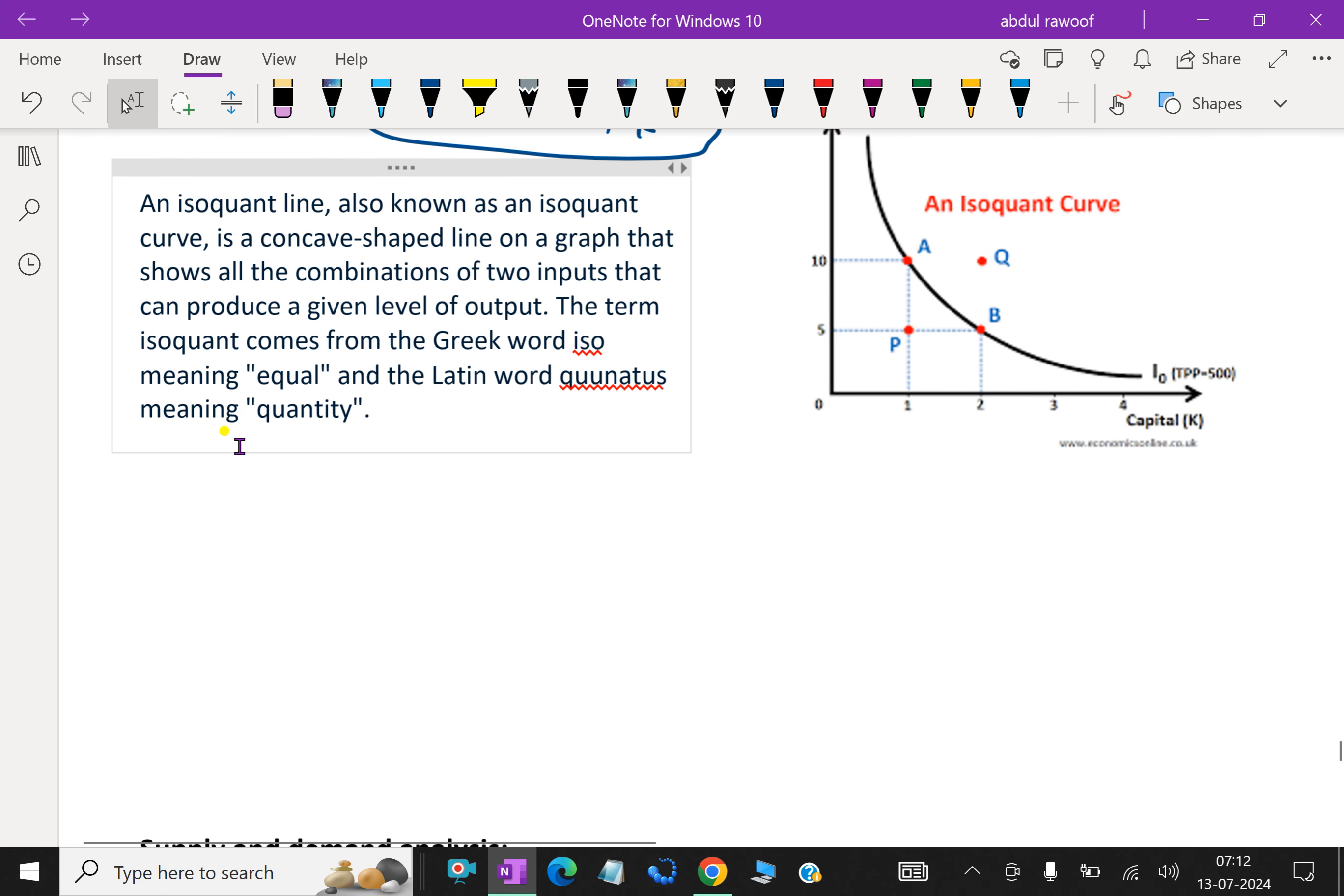Next one, isoquant line. What is isoquant line? It is also known as an isoquant curve, is a concave shaped line on a graph that shows the combination of two inputs that can produce a given level of output. The term isoquant comes from the Greek word iso meaning equal and the Latin word quantus meaning quantity.